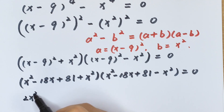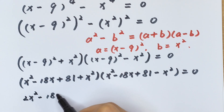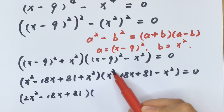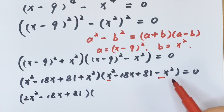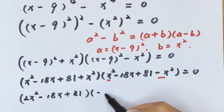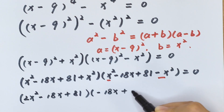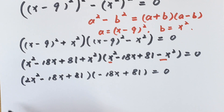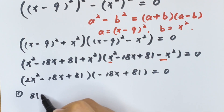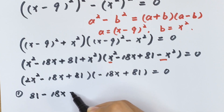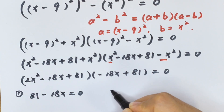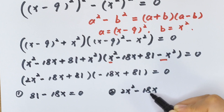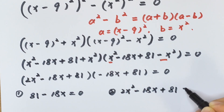Now we have two cases. First: x squared minus 18x plus 81 equals 0. The other case is 2x squared minus 18x plus 81 equals 0.